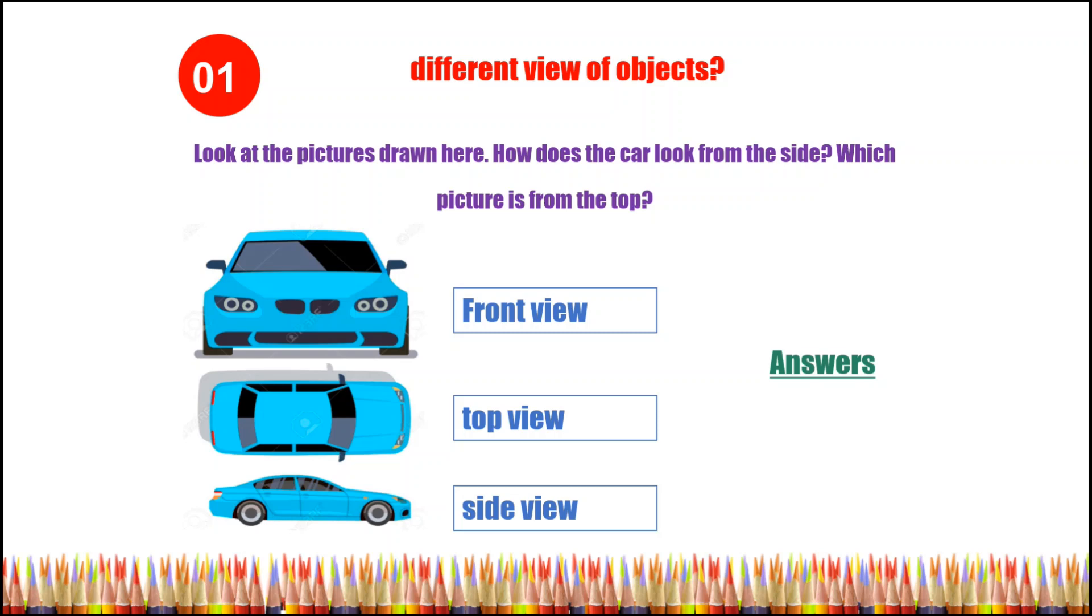In the side view we can see two wheels and two doors. By seeing the side view can we conclude the car has only two wheels? No. In the top view we can see a small rectangular box and the front view has two headlights and two mirrors.